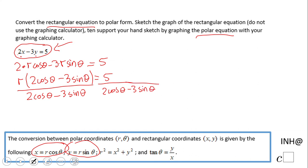And we end up with r equals, as you see there, 5 over 2 cosine theta minus 3 sine theta. And this is the polar form of this rectangular equation. So now I'm gonna use a graphing calculator